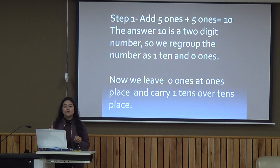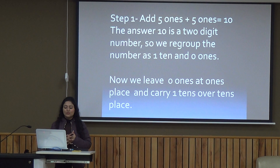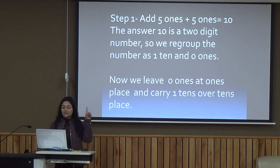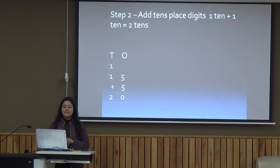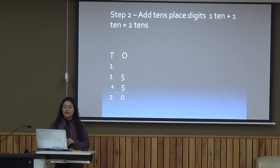We leave the 0 ones at the ones place and carry the 1 ten to the tens place. Step 2: add the tens place digits — 1 ten plus 1 ten is equal to 2 tens.